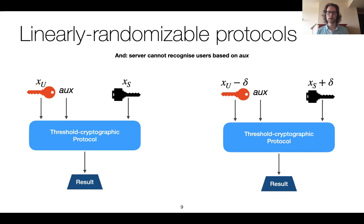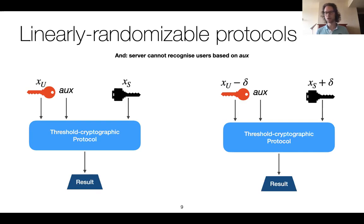This privacy property cannot be achieved if the auxiliary data fed into the protocol by the user essentially reveals the user's identity. So additionally we require that this auxiliary data — be it groups to operate on or extra keys — is generic enough that it does not identify the user. For most sigma-type zero-knowledge proofs this is easy to achieve, but it is not the case for all protocols, so that is something to pay attention to.